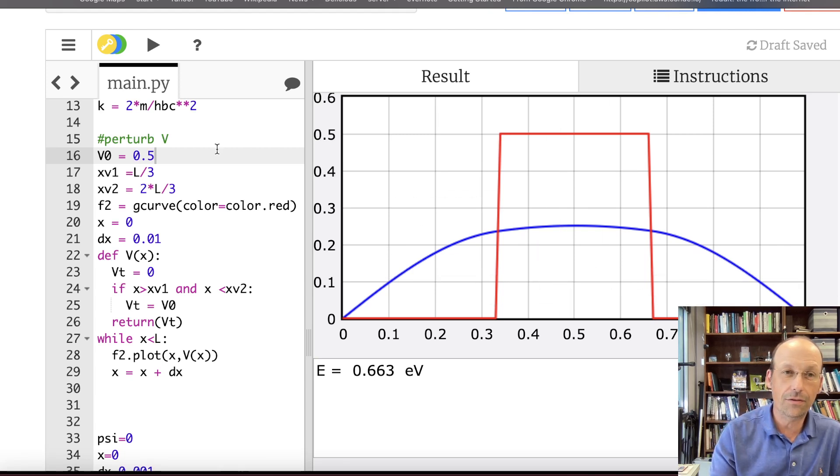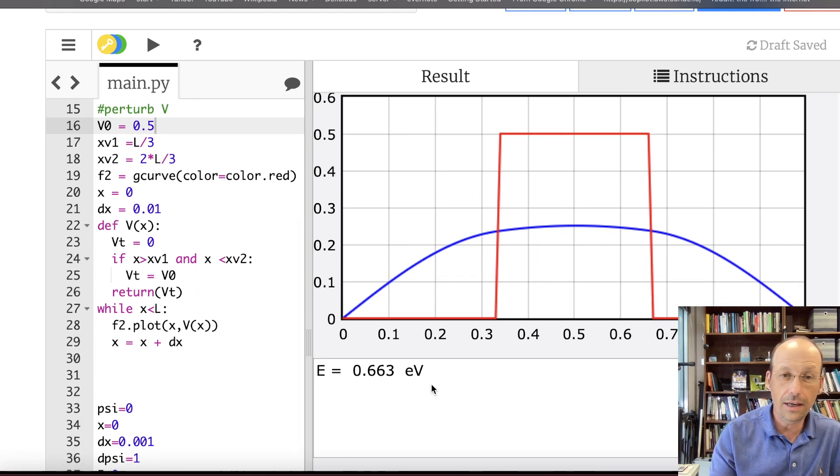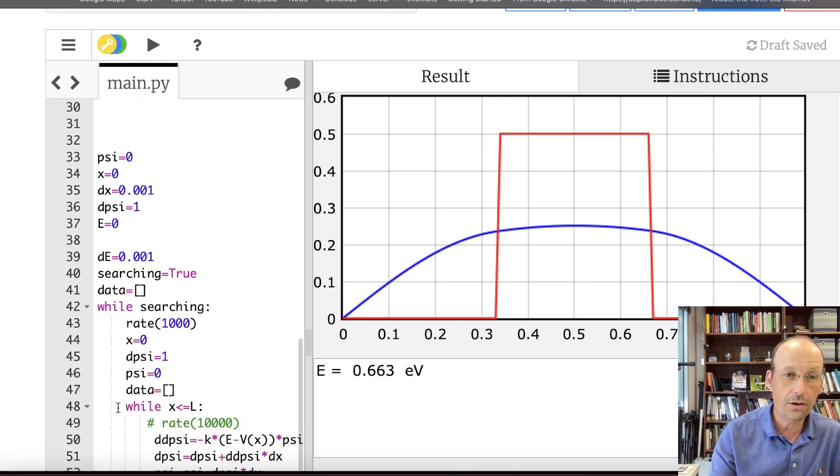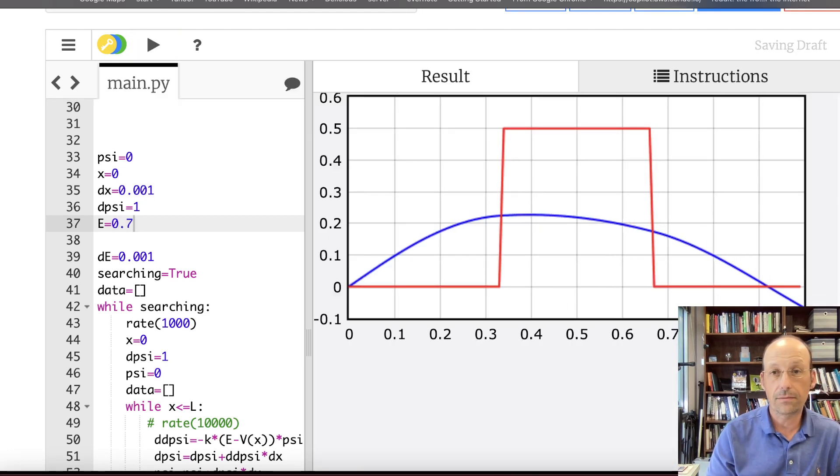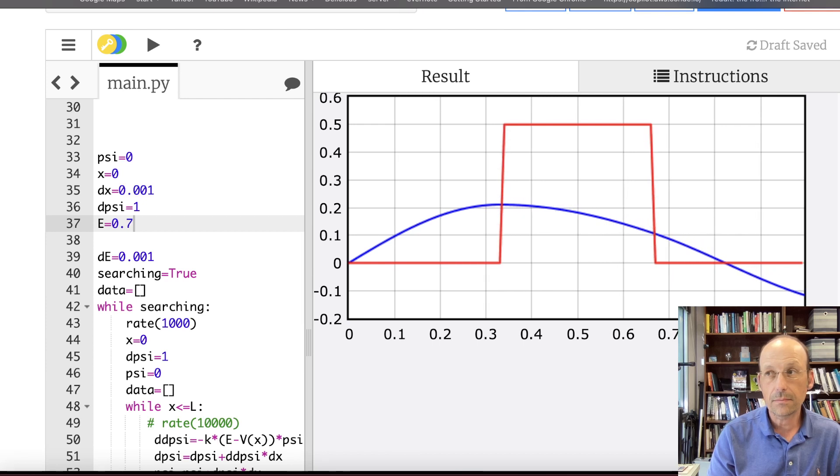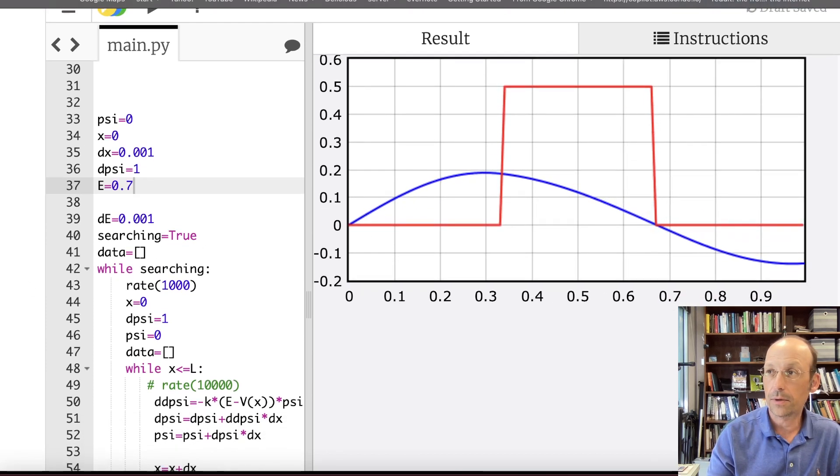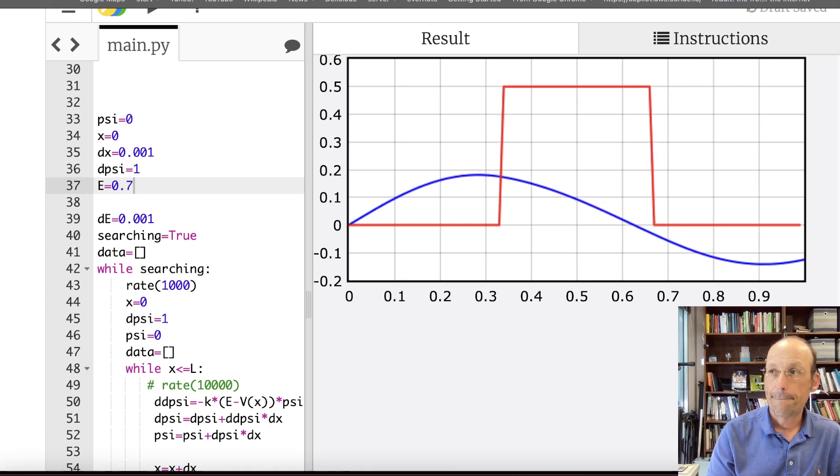Let's go ahead and find the second energy level. So if I go up here, so this gives me an energy level of 0.663. So if I go down here and say, start with an energy of 0.7 and run it, it'll find the second energy level. And I'm plotting the wave function here. See, can you see that? It's my face in the way. Nice.